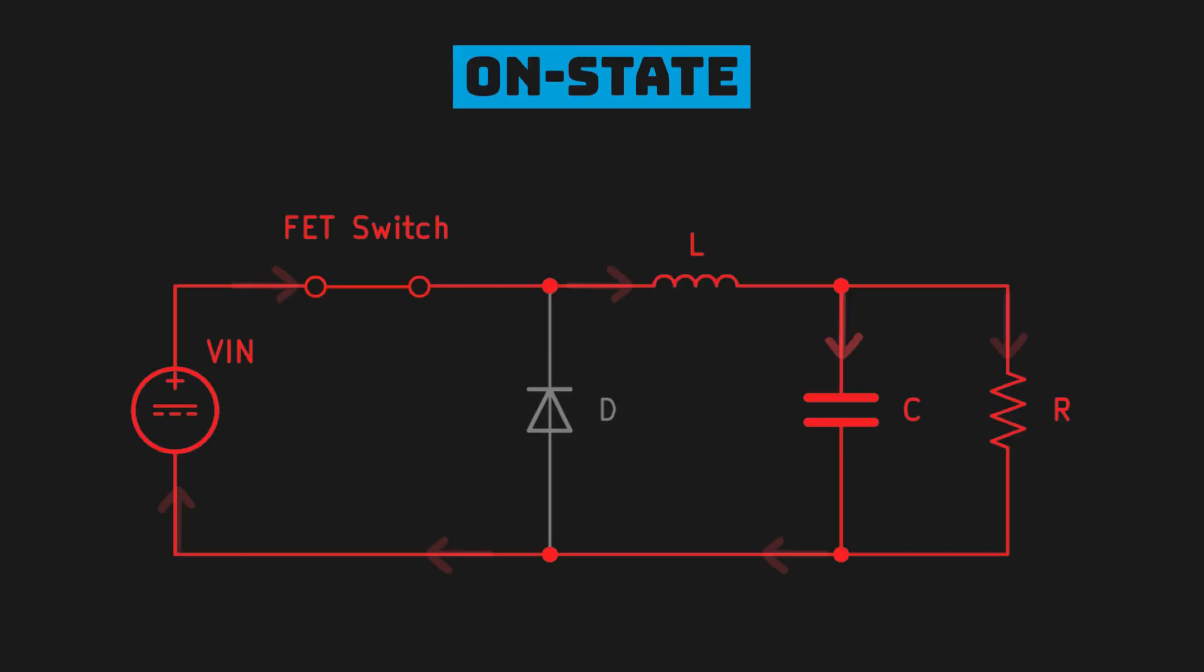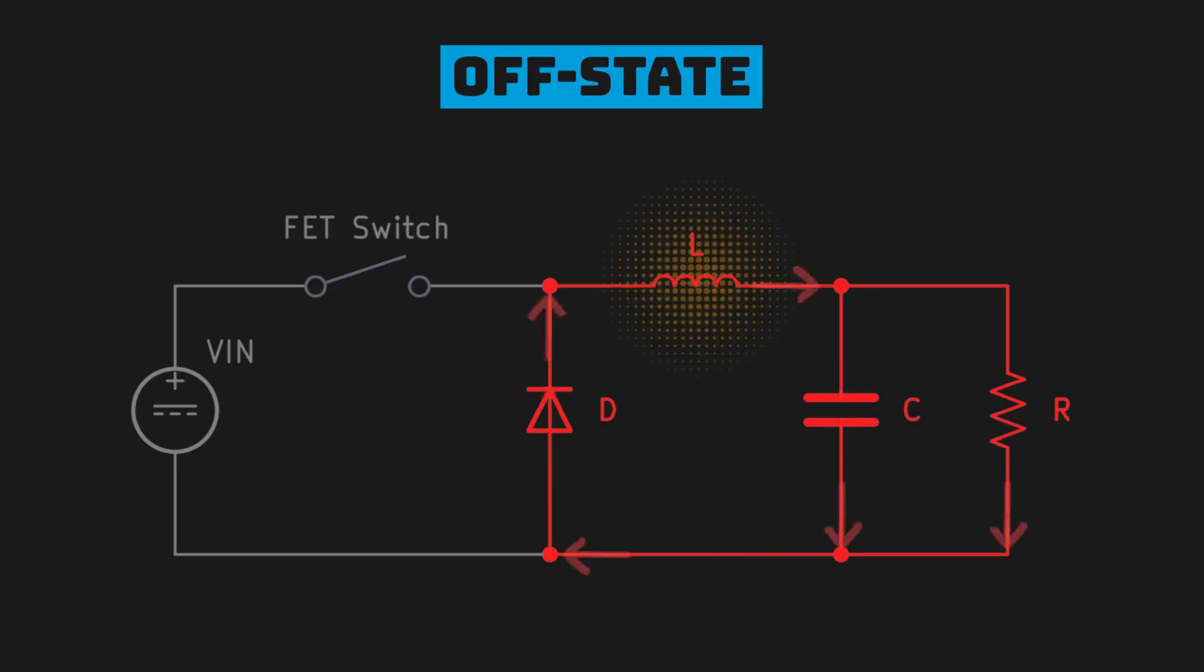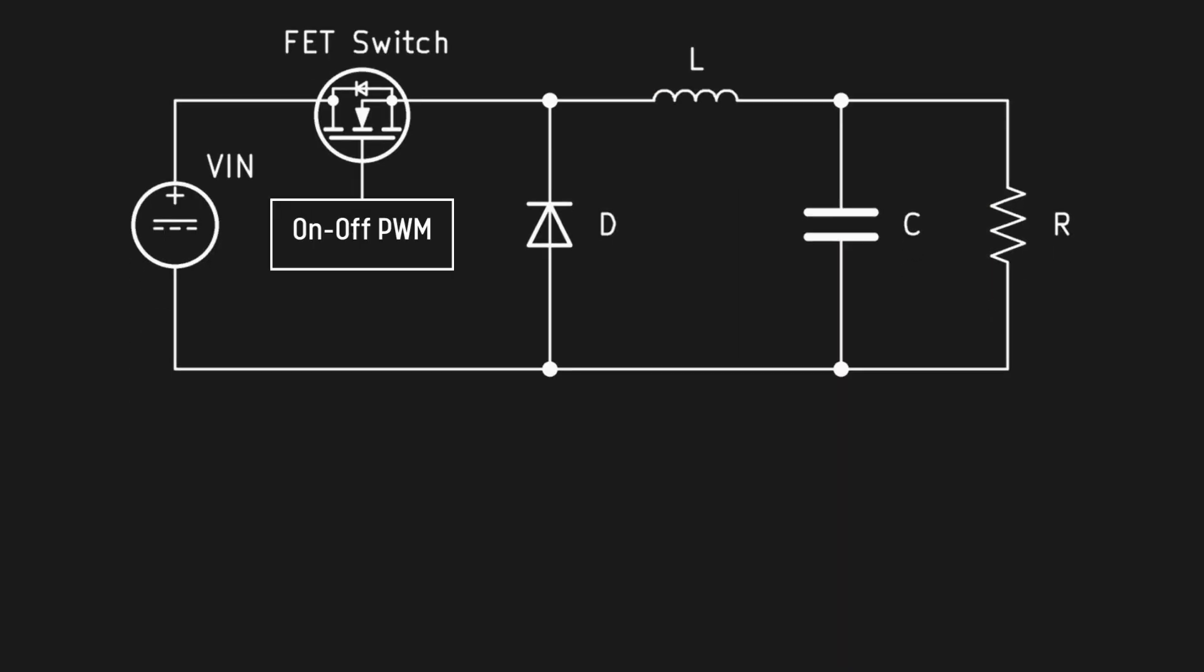When the switch is on, energy is transferred from the input to the load and also stored on the magnetic field of the inductor. When the switch is off, no energy flows from the input and the inductor provides its stored energy to the load.